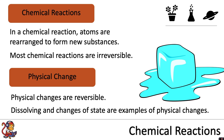Dissolving and changes of state are examples of physical changes. For example, in the picture you can see a melting ice cube. This is not a chemical reaction — this is simply a physical change whereby the ice is changing from a solid state into a liquid one. And this is something that can be reversed; if you were to cool it down again, it would solidify and turn back into an ice cube.